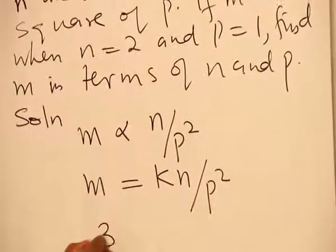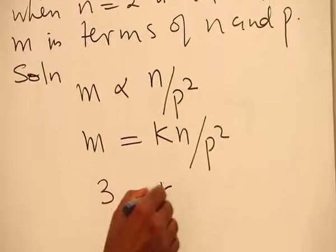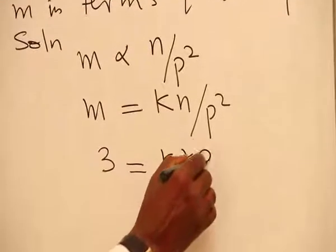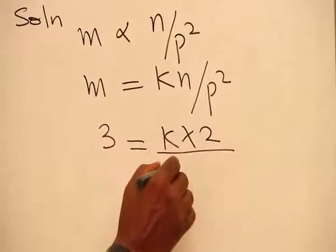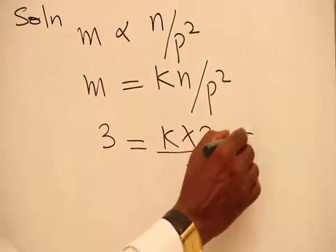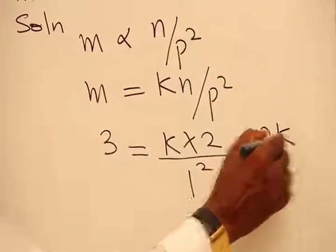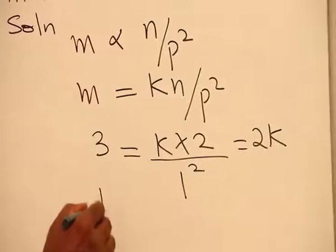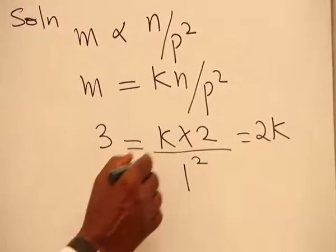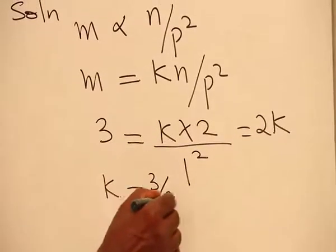And we are told that if M is 3, we have K, and our N is 2, and then our P is 1 squared. This gives you 2K, so that your K will be equal to 3 all over 2.